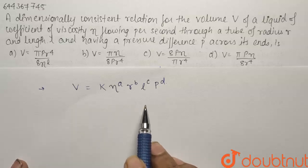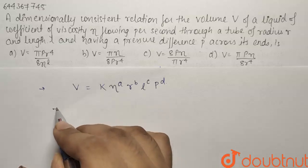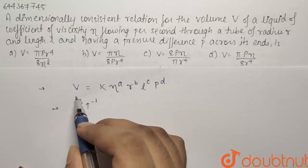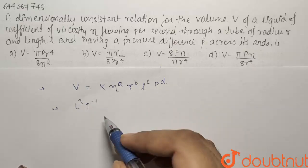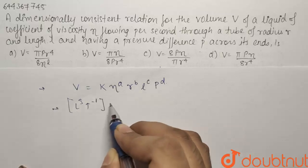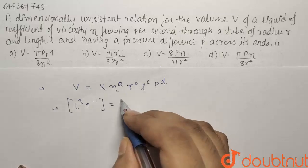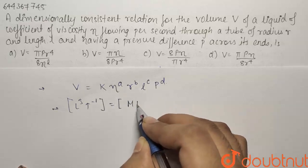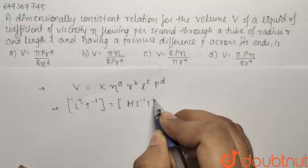So for this equation to be dimensionally correct, the dimension of LHS has to be equal to dimension of RHS. So if I talk about dimension of LHS, it is L cube T minus 1 because it is volume per second and this will be equal to dimension of the constant is 0. So it will be eta to the power A. What is the dimension of eta? It is ML minus 1 T minus 1.